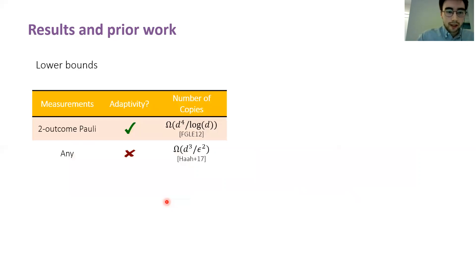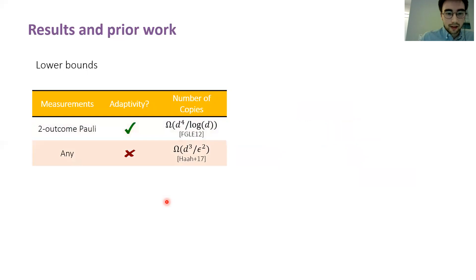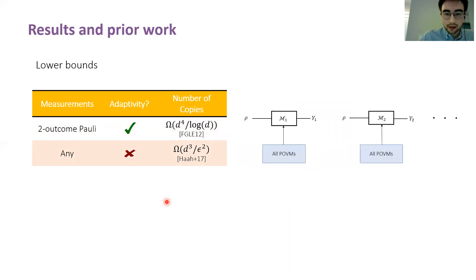Now for lower bounds — for each row I'll display a cartoon of the strategy being considered. It was shown by Flammia, Gross, Liu, and Eisert in 2012 that you need at least d-to-the-four copies if your measurement strategy is limited to two-outcome Pauli measurements, even if you can adapt on prior outcomes. Then in the work that showed the upper bound on entangled tomography, they also showed a lower bound in the case where measurements must be non-adaptive. And this brings us to our results.